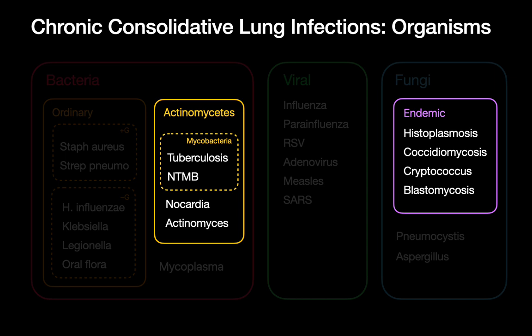The actinomycetes group contains mycobacteria — TB and non-tubercular mycobacteria — in addition to nocardia and actinomycosis. Then you have endemic fungal infections. These organisms are responsible for chronic infections partly because the immune system has a really tough time eliminating them, but the infections are not so aggressive that they would quickly kill a person.